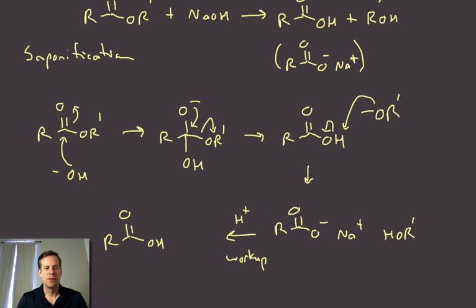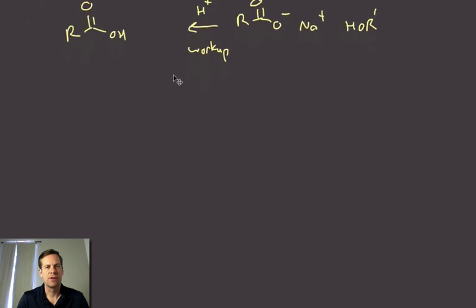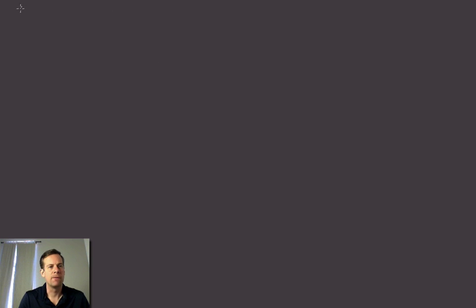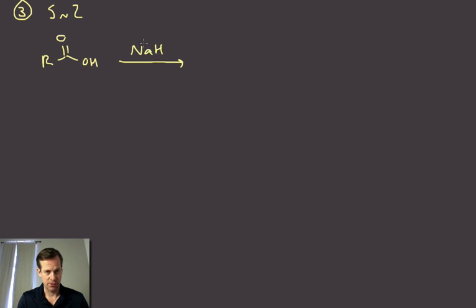Just to end off this conversion of acids to esters, there's one final one. We had the conversion to acid chloride and then to ester, we had the Fischer esterification which was number two, and then the third general way that you can do this is just to use SN2 chemistry. This is a lot more limited in its scope but it's certainly something you can think about. What you're gonna do here is generate the sodium carboxylate—there's a number of ways you can do this, it doesn't require such a strong base but that would be sufficient as well.